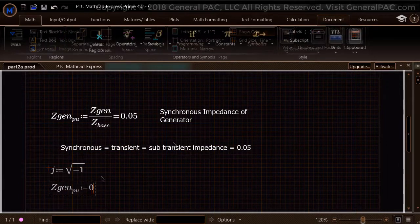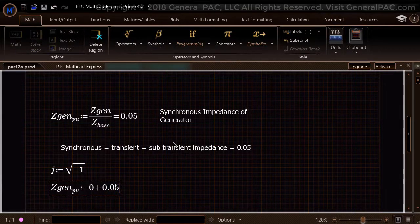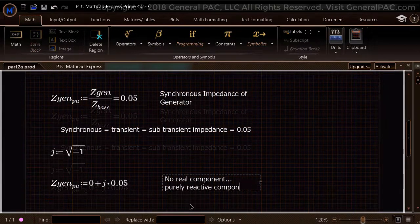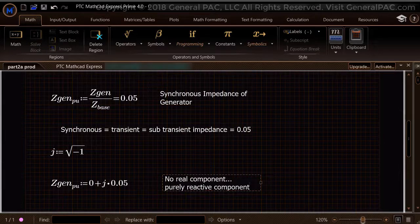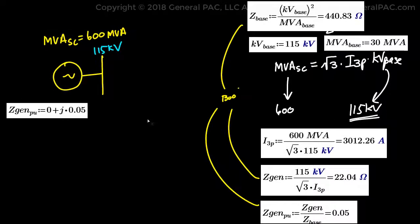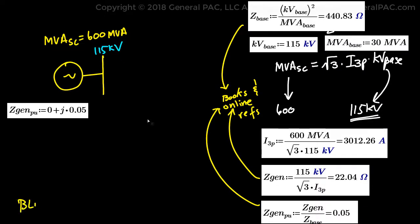Furthermore, we shall set this impedance to be purely reactive, which means there will be no real component of the per unit impedance quantity. All of the equations in this example can be found in many books and online references. They are also explained in Appendix 4.1 in Blackburn's book.